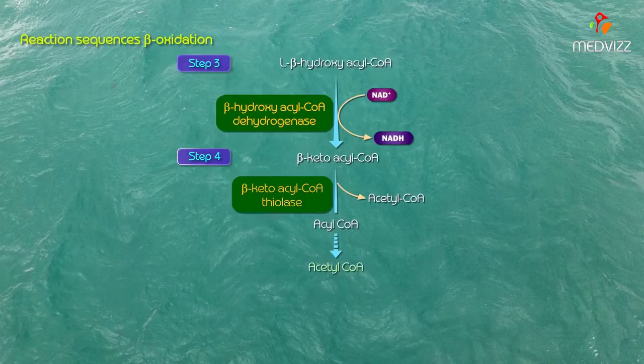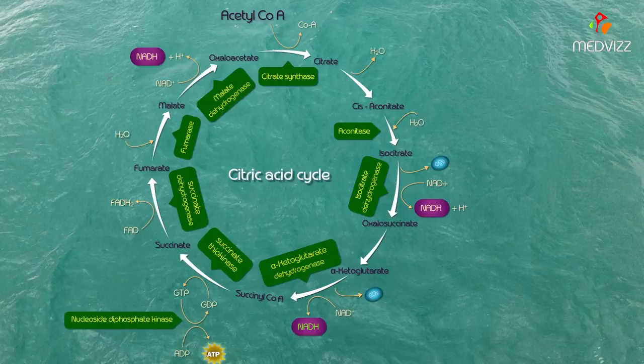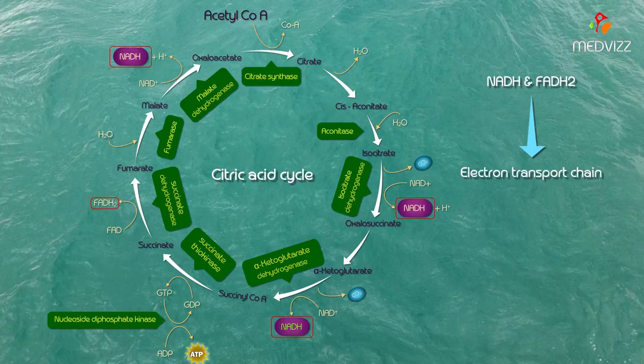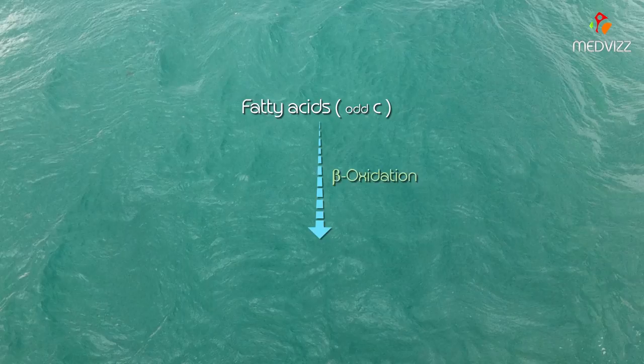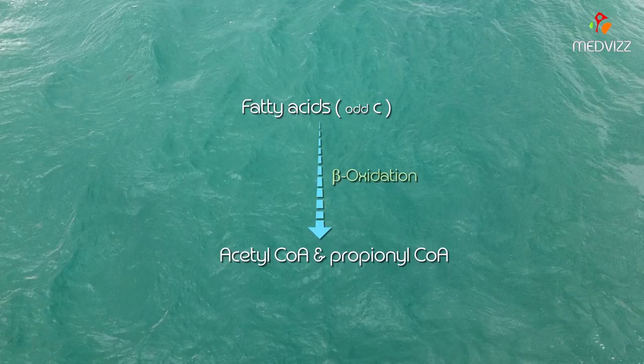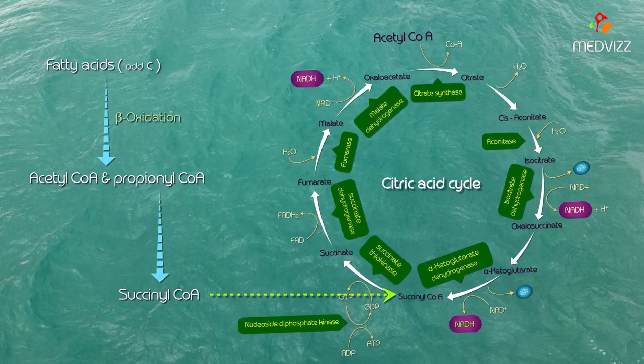The acetyl CoA formed as the end product of beta oxidation enters into the citric acid cycle, which also takes place in the mitochondrial matrix to produce ATP. The NADH and FADH2 produced enter the electron transport chain to produce ATP. Fatty acids containing an odd number of carbons undergo beta oxidation to produce acetyl CoA as well as propionyl CoA.